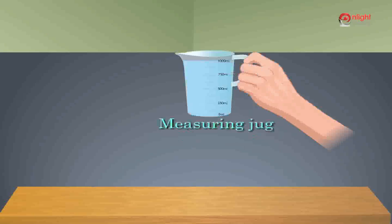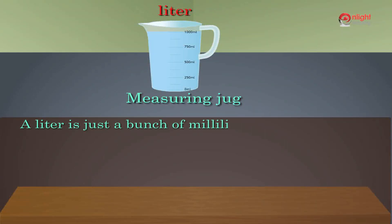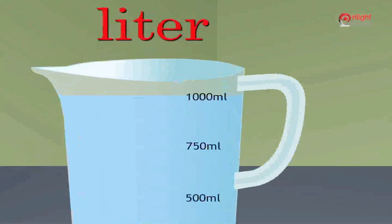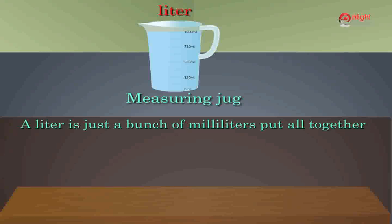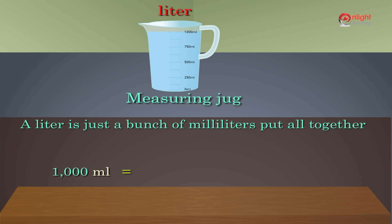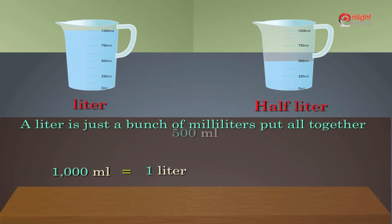A liter is just a bunch of milliliters put all together — in fact, one thousand milliliters makes up one liter. One liter is equal to one thousand milliliters. So we can also say that one thousand milliliters is equal to one liter. Five hundred milliliters is equal to half a liter.